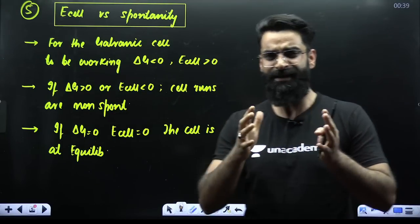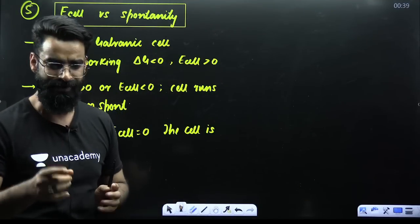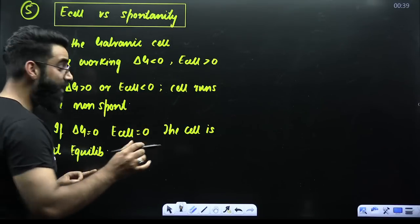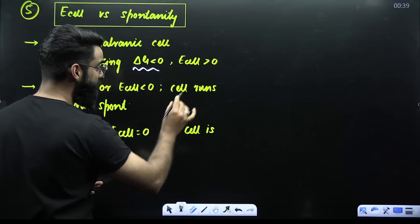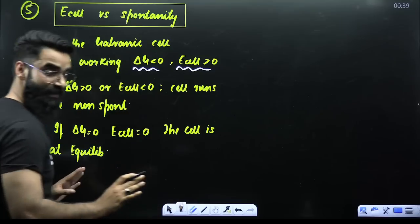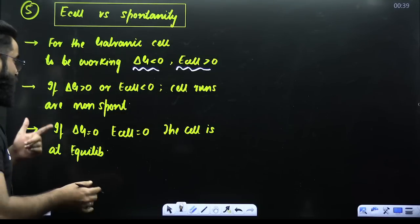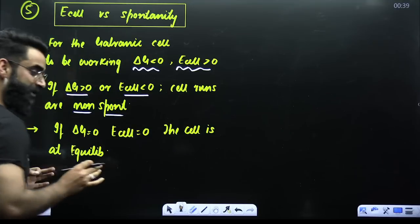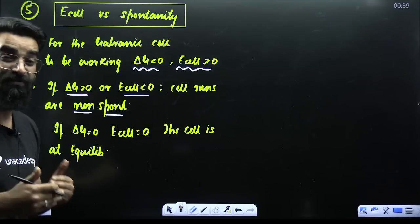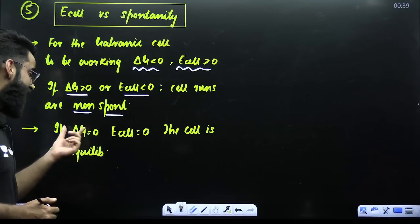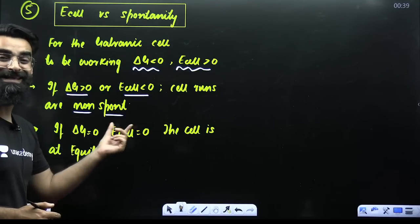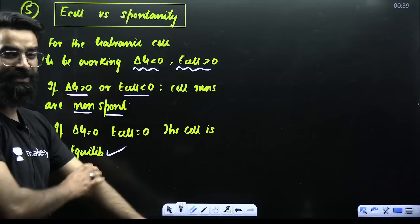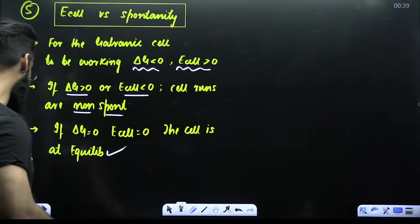Concept number 5: sometimes you'll be given a cell and asked whether the cell reaction is spontaneous or not. Remember, cell reactions are only spontaneous — the cell will only work — if delta G is negative or E cell is positive. For any cell where delta G is positive or E cell is negative, the reaction is non-spontaneous and the cell won't work. If delta G equals 0 and E cell equals 0, the cell is at equilibrium.